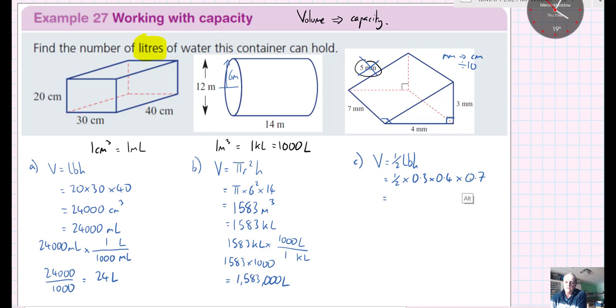3 4s are 12, 12 7s are 84, half of 84 is 42. But because I've got 1, 2, 3 decimal places in the question, I need 1, 2, 3 decimal places in my answer. So I need to put an extra 0 point there. You could of course work this out in the calculator. So that gives me 0.042 cubic centimeters.